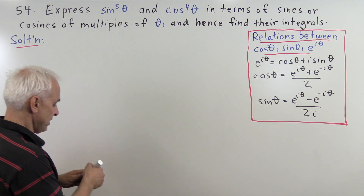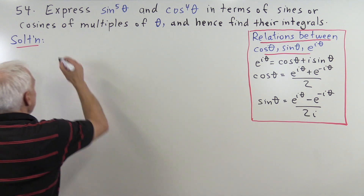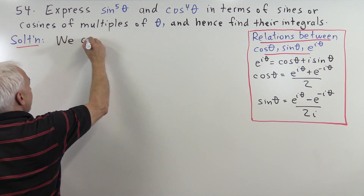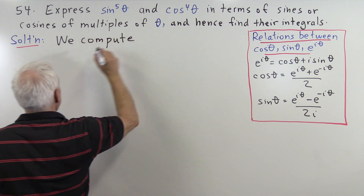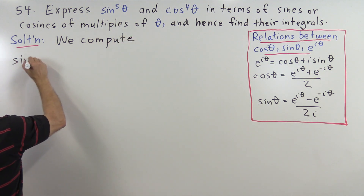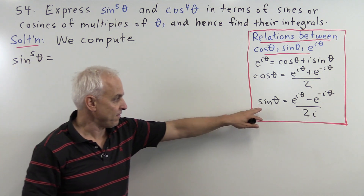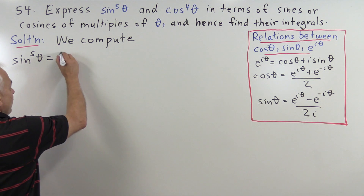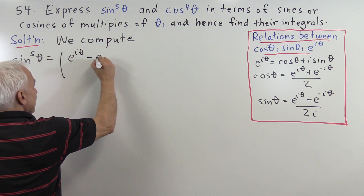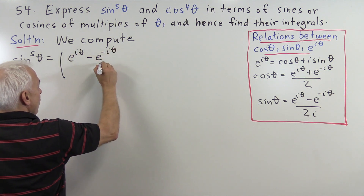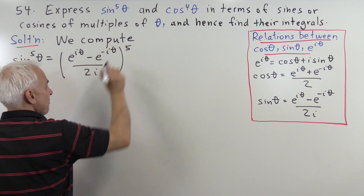So we're going to use that. Let's get going with sine to the fifth of theta. We compute that sine to the fifth of theta equals the fifth power of sine theta, so we get e to the i theta minus e to the minus i theta over 2i, raised to the fifth power.